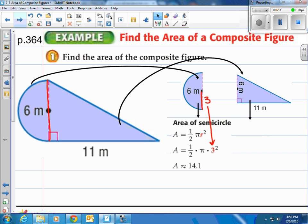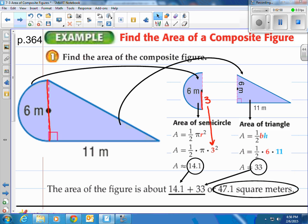That's 14.1 meters squared. Now let's take a look at the triangle, and if you remember the triangle, that's base times height divided by 2, or one half times base times height. So they've taken the base and the height, 6 and 11, multiplied it together, and then divided that in half, or multiplied by a half, and you get 33. So we would say the area of the total figure is going to be the two added up, 14.1 and 33 added together, and that's 47.1 square meters. As simple as that.